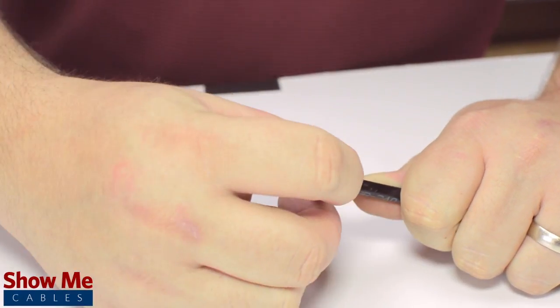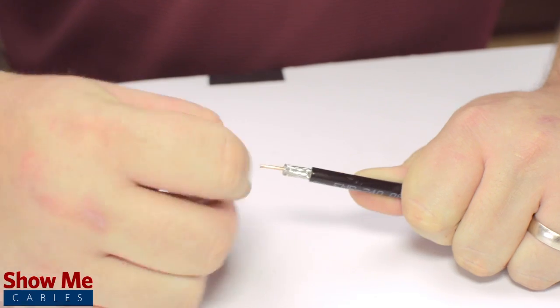The advantage of using a cable stripper is that it will strip back the jacket and dielectric at the same time.